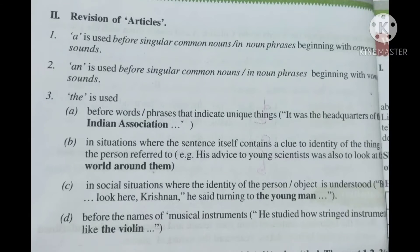Second one: in situations where the sentence itself contains a clue to identify the thing or the person referred to. Example: His advice to young scientists was to look at the world around them. The world.